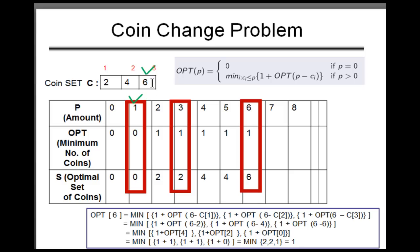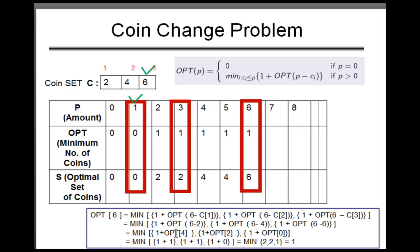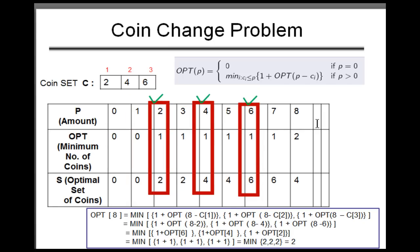For the eighth value — the last amount we need to change — we compute 1 + opt(8 − 2), 1 + opt(8 − 4), and 1 + opt(8 − 6). opt(6) is one, opt(4) is one, and opt(2) is also one, so all three give one plus one, which is two. The minimum for these three is two.